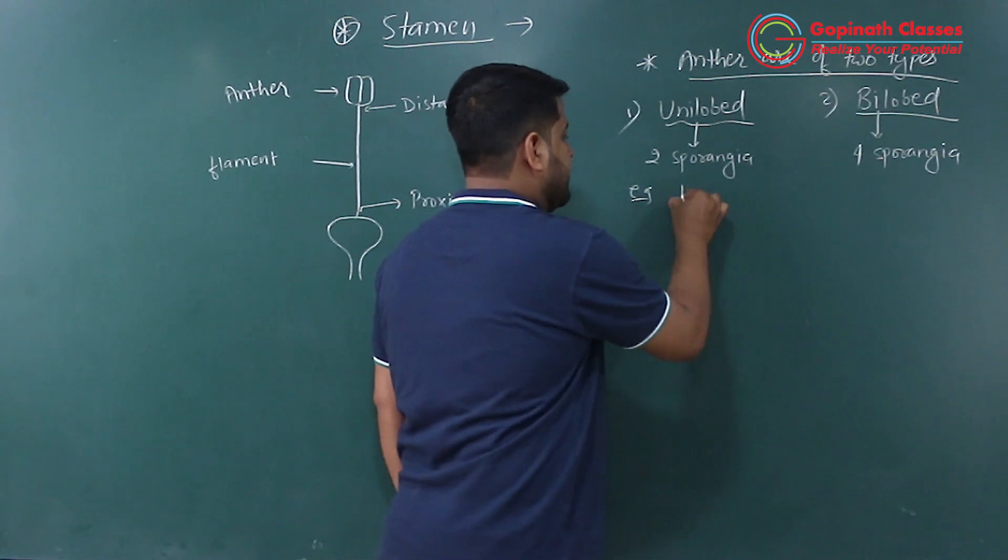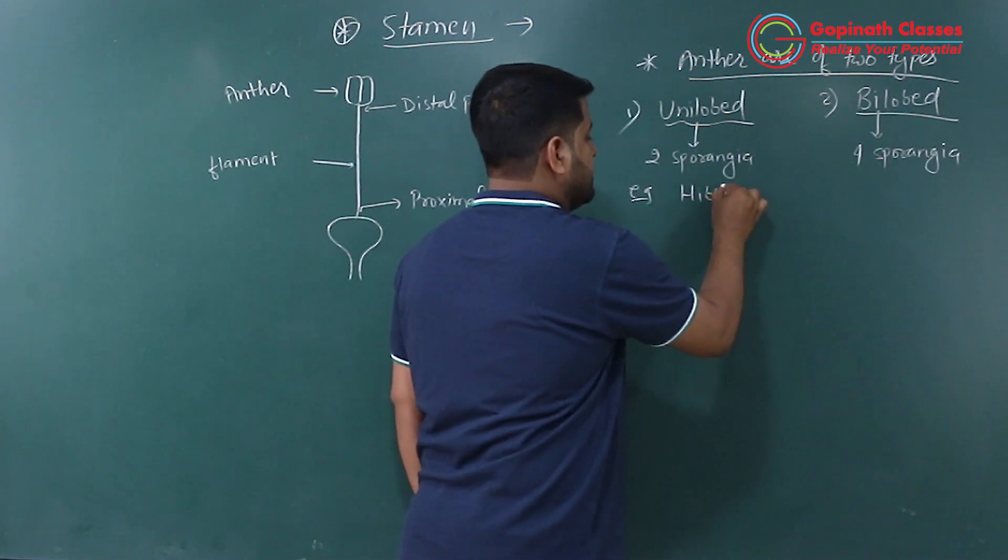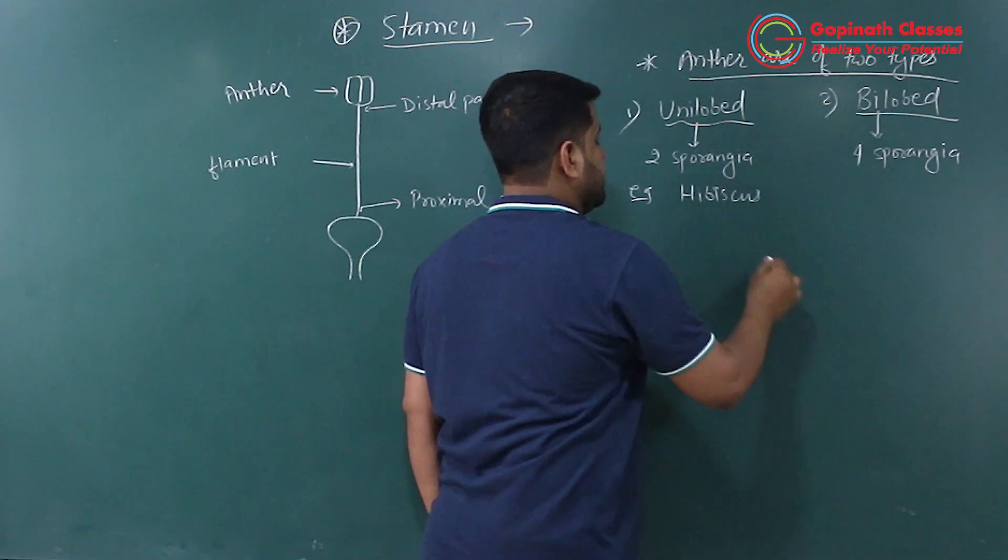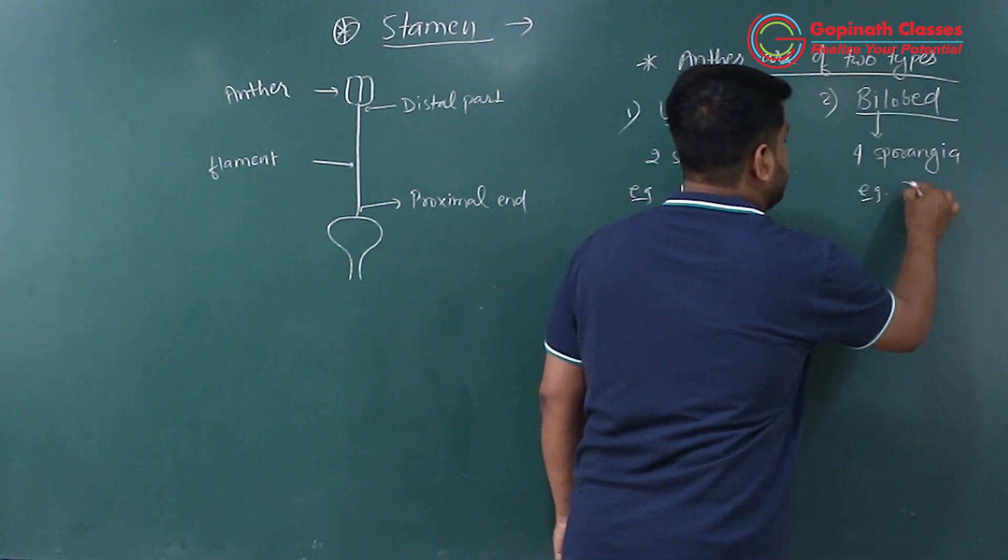Examples: unilobed is hibiscus and bilobed is datura.